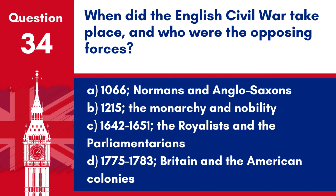Question 34. When did the English Civil War take place and who were the opposing forces? a. 1066 – Normans and Anglo-Saxons. b. 1215 – the monarchy and nobility. c. 1642–1651 – the Royalists and the Parliamentarians. d. 1775–1783 – Britain and the American colonies. Answer: c. The English Civil War took place from 1642–1651 between the Royalists, supporters of King Charles I, and the Parliamentarians who sought greater parliamentary authority.